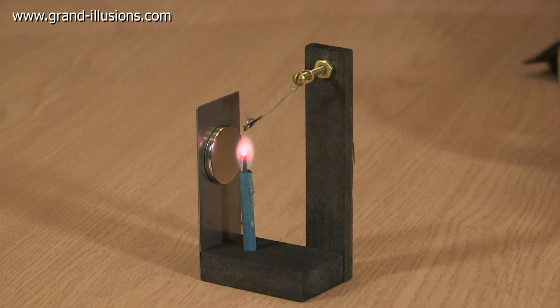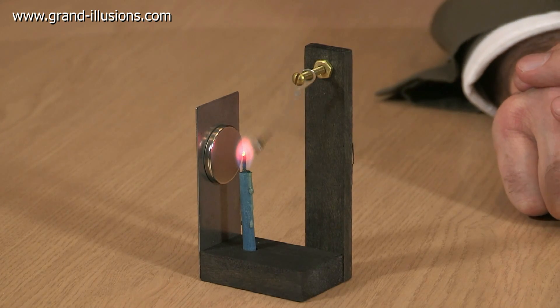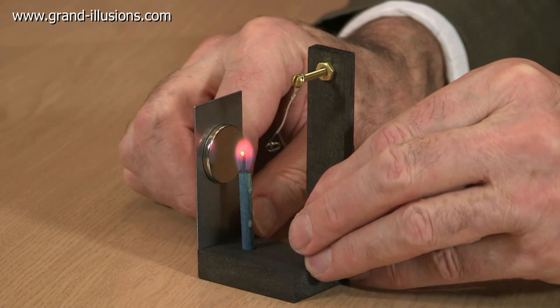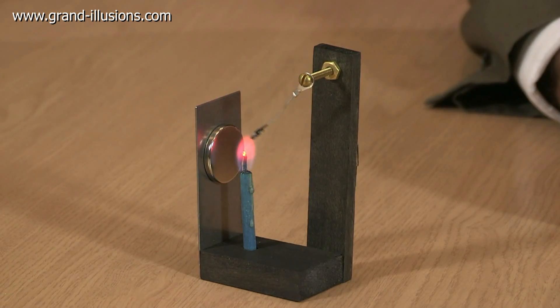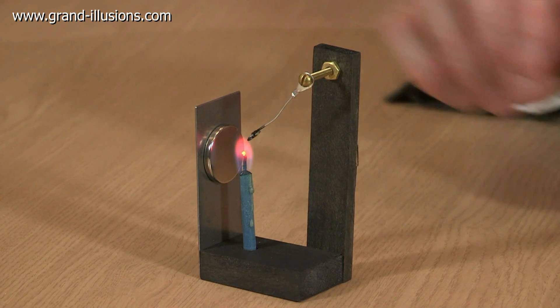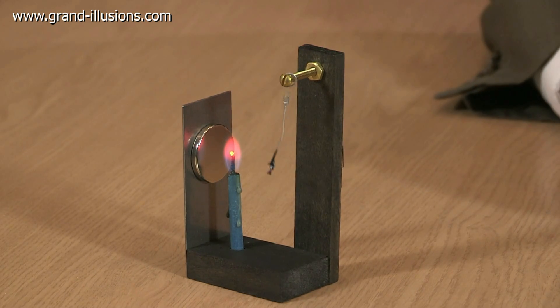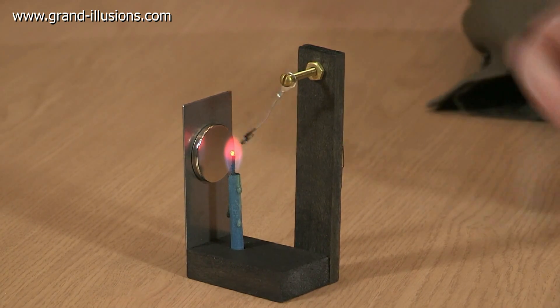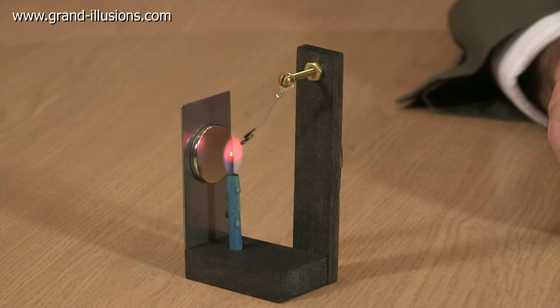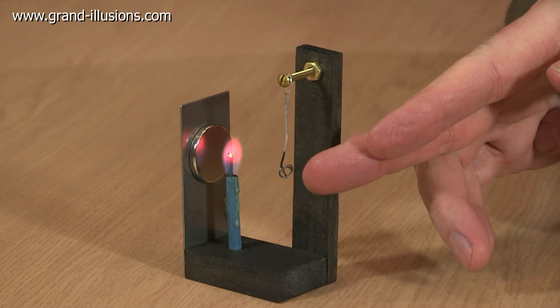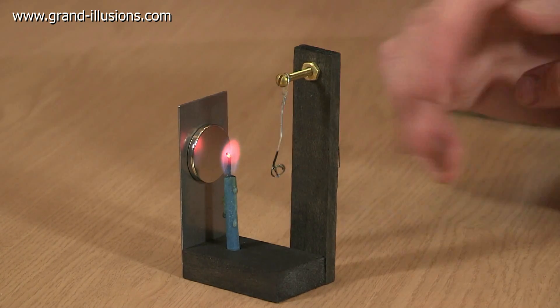Well the Curie point is the point at which the metal will lose its magnetism, so when this is coming into the magnetic field it's pulled towards it but once it comes over the flame it heats it above 200 degrees and loses its magnetic property. The magnet has no effect on it. It then falls under gravity. Down here it's going to cool down and then be attracted by the magnet again.